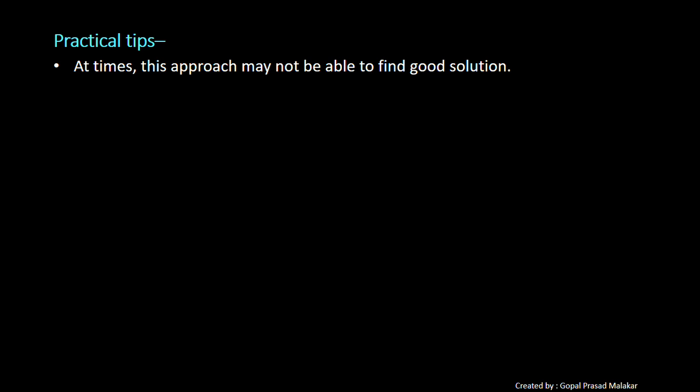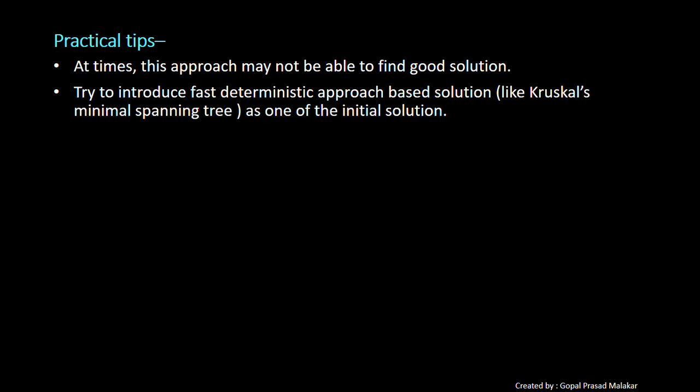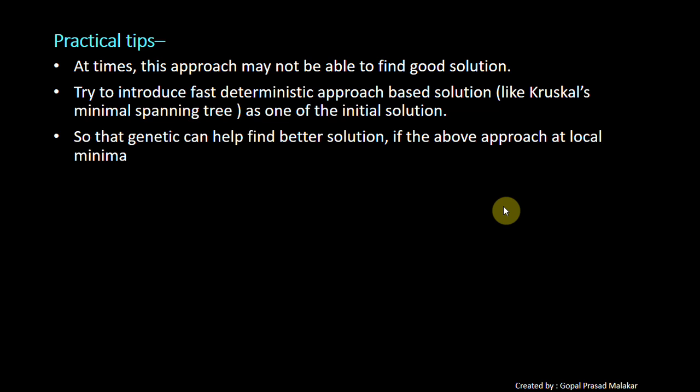Let me give you some practical tips because at times this doesn't find good solution. What you need to understand is that at times this approach may not be able to find good solution at all. Try to introduce some fast deterministic approach based solution as one of the initial solutions, like Kruskal's minimum spanning tree for traveling salesman problem, as one of the initial chromosomes. This way genetic will help you try to evolve a better solution if the above solution has not found the global minima.